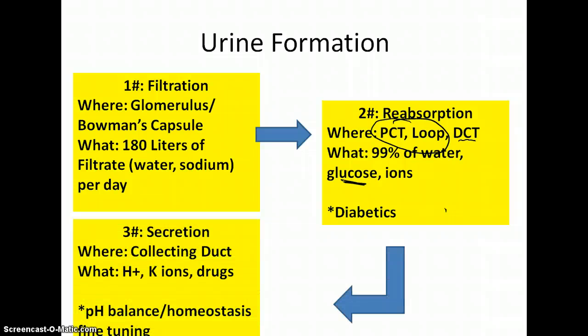The third step, secretion, happens in the distal convoluted tubule and the collecting duct. This is where we get the homeostatic fine-tuning — hydrogen ions may get secreted back into the filtrate, which helps balance the pH of our blood. These mechanisms all help fine-tune and balance homeostasis.